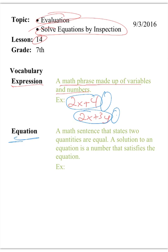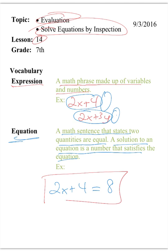Now if we look at an equation, it's a math sentence that states two quantities are equal. A solution to an equation is a number that satisfies the equation. So you may have 2x plus 4 is equal to 8. So this in itself is an equation. It has an equal sign. It says that this quantity is equal to that quantity.